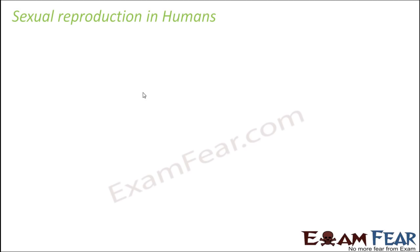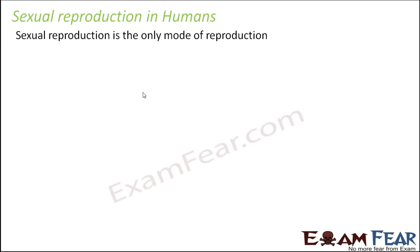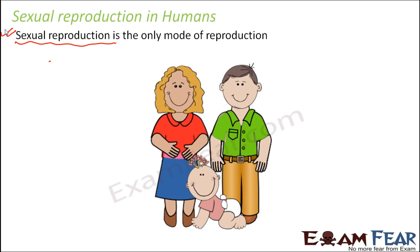So let us exclusively start discussing sexual reproduction in humans. In human beings, as far as reproduction is concerned, there are two modes — sexual reproduction and asexual reproduction. In sexual reproduction, two parents are needed: a father and a mother. In asexual reproduction, just one parent is needed. But in human beings, sexual reproduction is the only mode of reproduction — there is no asexual reproduction. Whenever you talk about reproduction in human beings, you always need two parents, a mother and a father, to give birth to a young one.